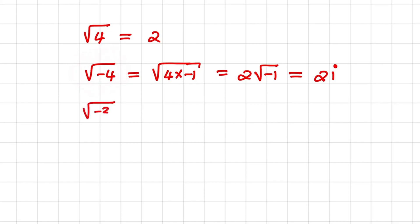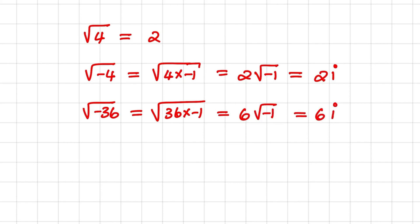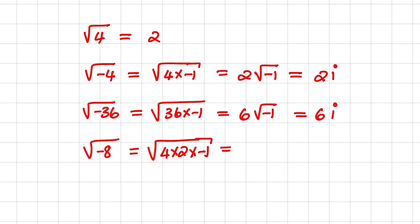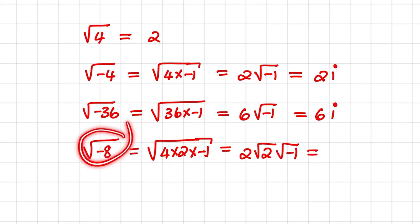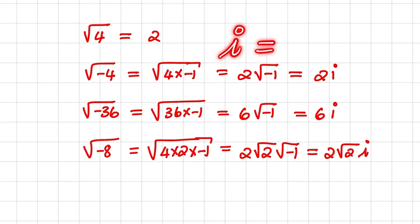Another example: the square root of negative 36 equals the square root of 36 times negative 1, which equals 6 times the square root of negative 1, and that equals 6i. For the square root of negative 8, we rewrite negative 8 as 4 times 2 times negative 1. The square root of 4 is 2, the square root of 2 is irrational, and then we have the square root of negative 1. So the square root of negative 8 equals 2√2·i. These are practical tips on applying the imaginary number in complex numbers.